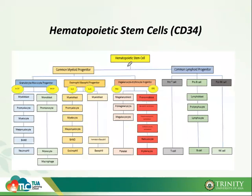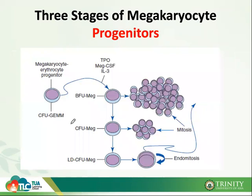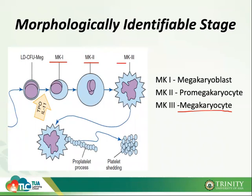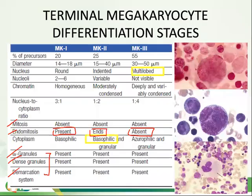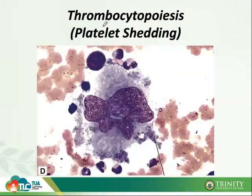From the hematopoietic stem cell, it becomes your CFU-GEMM, influenced by TPO, MEG-CSF (megakaryocyte colony-stimulating factor), and interleukin-3, becoming BFU-Meg, CFU-Meg, LD-CFU-Meg, then megakaryoblast, promegakaryocyte, and finally the mature megakaryocyte. Once mature, the megakaryocyte resides on the endothelial lining of your bone marrow and is ready for platelet shedding — also known as thrombocytopoiesis.